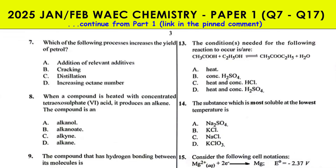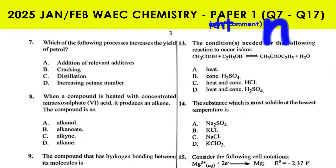Cracking is the process of breaking down large or high molecular mass, long chain alkanes into low molecular mass, shorter chain and more useful alkenes. The main purpose of cracking is to improve or increase the yield of petrol, because the quantity of petrol produced through fractional distillation is not enough to meet the demand for petrol.